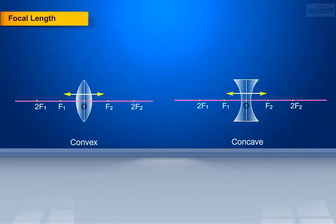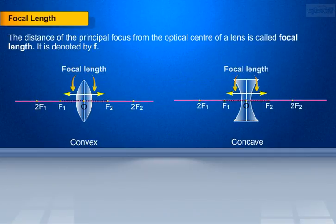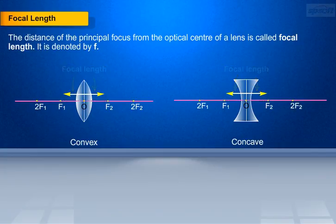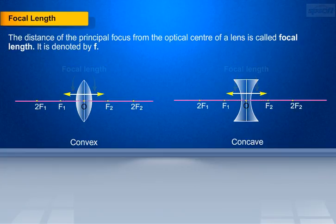Focal length. The distance between the principal focus and the optical center of the lens is called the focal length. It is denoted by the letter f in lower case. The distance between the principal focus, i.e. F1 or F2, and the optical center O is the focal length of the lens.